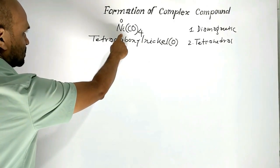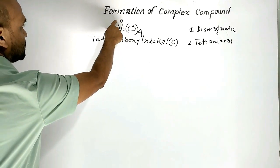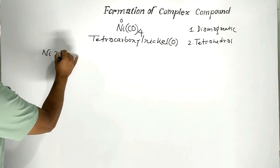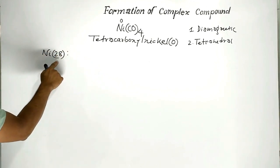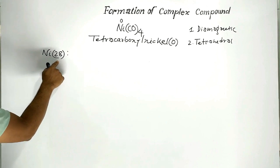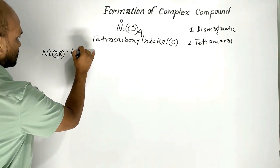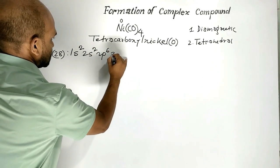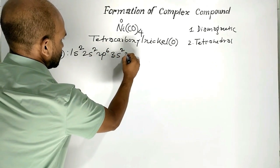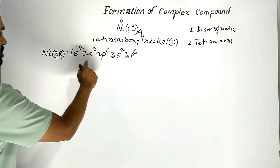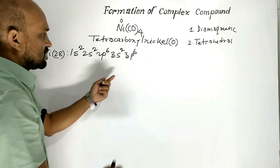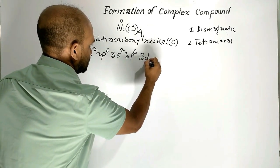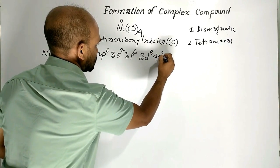In tetracarbonyl nickel, the oxidation number of nickel is zero. Let us consider the electronic configuration of nickel. The atomic number of nickel is 28. Its electronic configuration is 1s2, 2s2, 2p6, 3s2, 3p6 — that accounts for 18 electrons — then 3d8, 4s2, accounting for all 28 electrons.